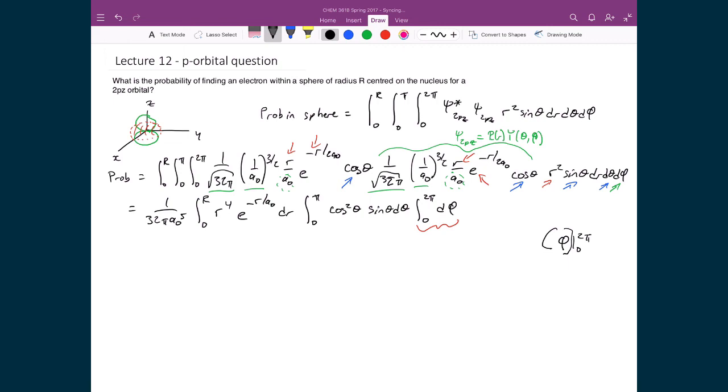The second integral is this middle one in terms of theta. This one actually looks somewhat difficult, but it's really straightforward. If we look at the antiderivative, that integral is just -cos³ theta/3, evaluated between 0 and π.